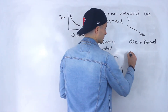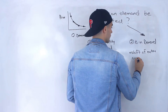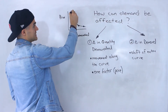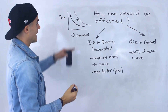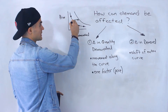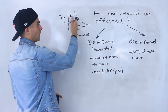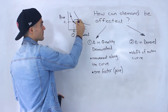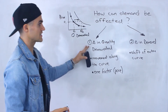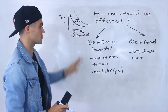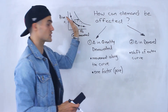A change in demand, on the other hand, is a shift of the entire curve. We take the curve and shift it to the right or to the left. Notice that if the entire curve shifts, the quantity demanded changes because at the same price — say price one — we had quantity one before, but after the demand curve shifts, at that same price we now have a new quantity. So change in quantity demanded is movement along the curve, while a change in demand is the shift of the entire curve.